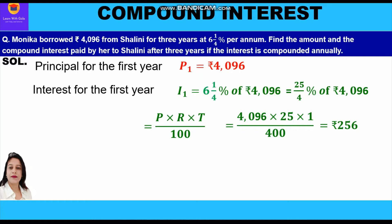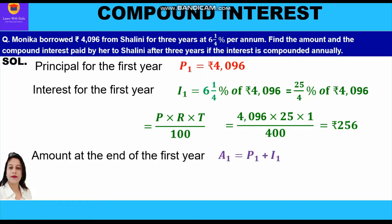Now we shall calculate the amount at the end of the first year, which is the sum of the principal of the first year and the interest of the first year. That is 4096 plus 256, and we shall get rupees 4352 as the amount at the end of the first year.